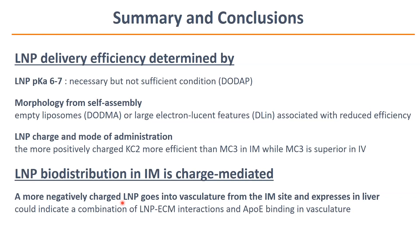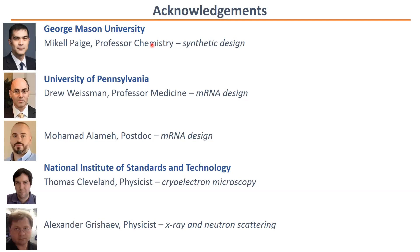In summary, we looked at determinants of delivery efficiency of mRNA by LNPs. A pKa of six to seven was needed, and we related that to the aqueous phase pKa of the ionizable lipid — a very consistent relationship. DODAP violated that and was not effective. DODMA and DLIN required accounting for the morphology resulting from self-assembly to understand their potency. KC2 was more potent than MC3 both in 293 cells in vitro and in intramuscular injection, but MC3 maintained superiority in intravascular hepatocyte targeting. We hypothesize that's a charge-mediated effect, with MC3 being a more negative LNP. More negative LNPs consistently leak out to vasculature in the intramuscular site and express more highly in the liver as off-target undesirable expression. This work is in revision and coming out soon in Communications Biology. I'd like to thank Michael Page for synthetic chemistry and water-soluble analogs, Drew Weissman and Mohamed Alameh for making the mRNAs and helping interpret in vivo data, and Tom Cleveland and Alex Grishaev at NIST for the cryo-EM imaging.